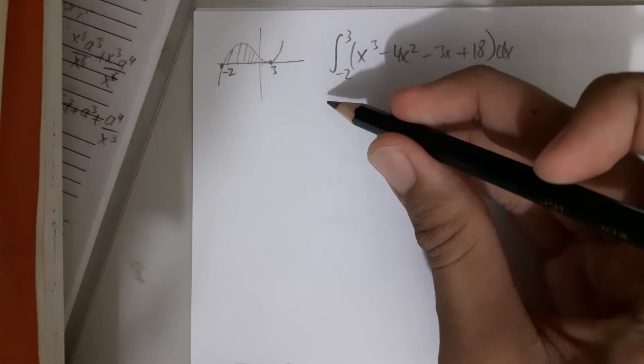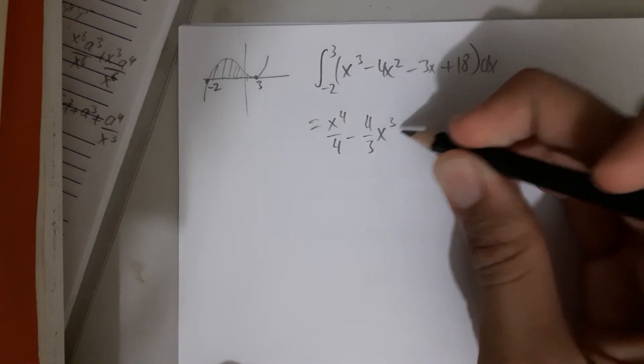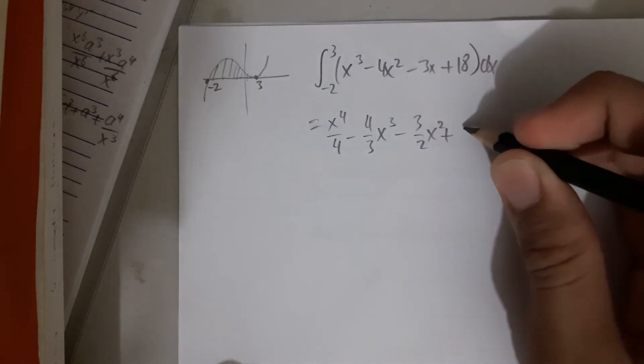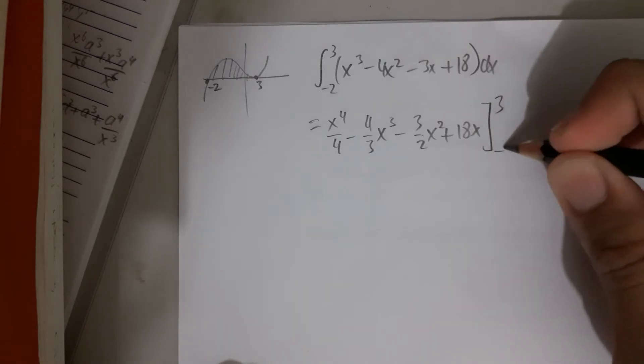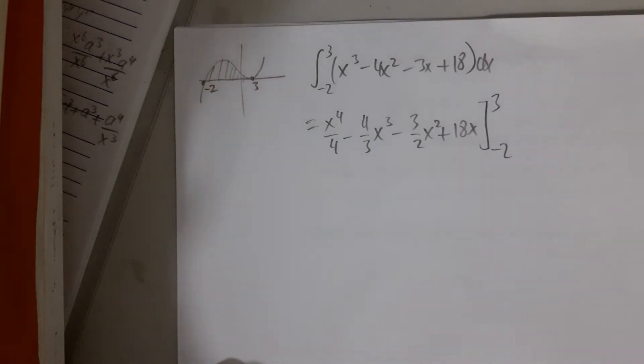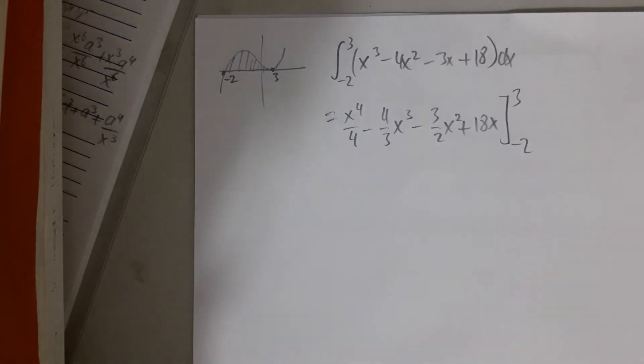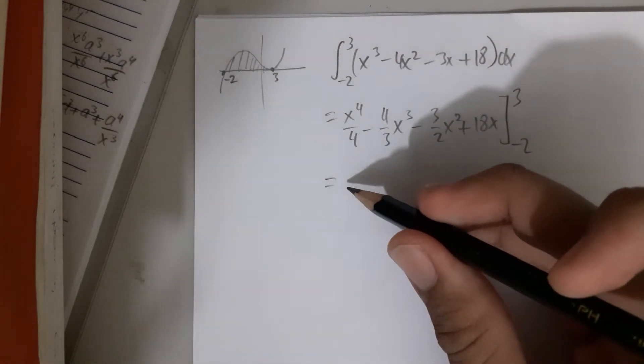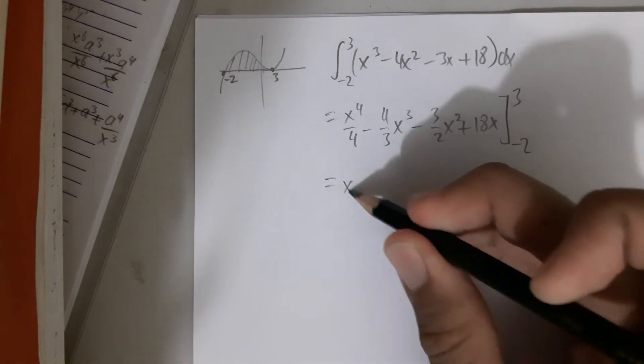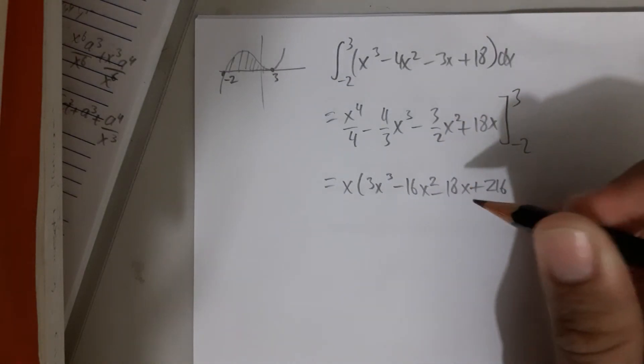This is minus 2 and 3. So by integration, it's the integration from minus 2 to 3 of the function x³ minus 4x² minus 3x plus 18 dx. So we're going to integrate like usual. x⁴/4 minus 4x³/3 minus 3x²/2 plus 18x. And then we're going to input the value of 3 minus 2 for this integral. So I'm going to factorize to ease the calculation.